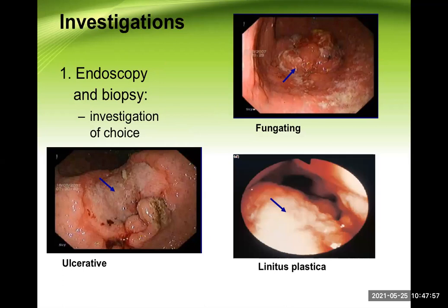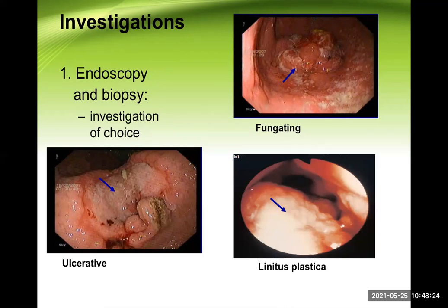Regarding investigations: the most important one is endoscopy and then biopsy — the investigation of choice. With endoscopy, the surgeon can directly visualize the malignant area, take a biopsy to confirm in the lab, and perform procedures like coagulation if the area is bleeding. Three important pictures are shown: fungating growth towards the lumen, ulcerative type with overhanging edge and slough at the base, and linitis plastica with a very narrow lumen.